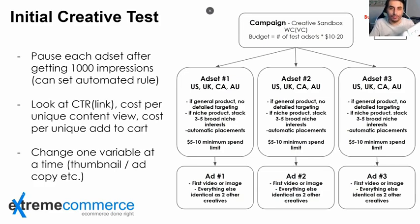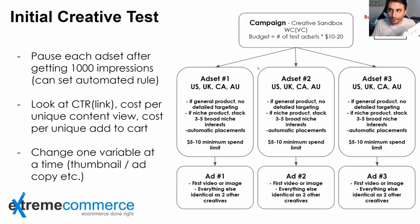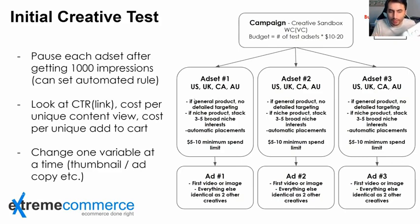For budget optimization, use ABO — not CBO, not LTV. Simply turn off CBO. Depending on the number of videos you have for a particular product, create that many ad sets. If you have 8 different videos, make 8 ad sets. If you have 5 different videos, make 5 ad sets. If you have 3 different videos, make 3 ad sets.